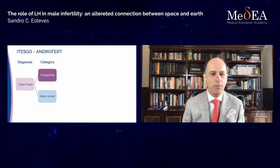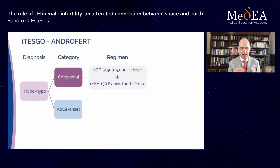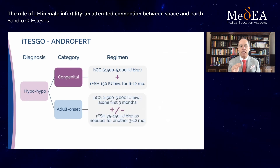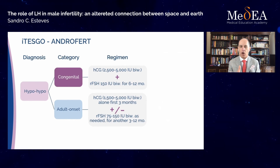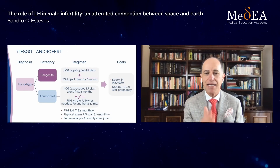If the patient has hypogonadotropic hypogonadism, we assess whether it is congenital or adult-onset. In the congenital case, we give HCG plus recombinant FSH from the start. If the patient is adult-onset hypogonadotropic hypogonadism, we start with HCG alone for the first three months, then add recombinant FSH as needed for another three to 12 months, with the goal of having sperm in the ejaculate. These patients may achieve natural pregnancy; if sperm quantity is insufficient, we may explore intrauterine insemination or IVF-ICSI. We follow these patients monthly with hormone levels, physical examination, and semen analysis.